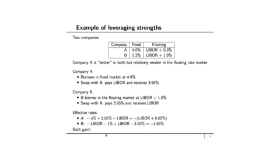Here's an example. Company A, if it were to borrow in the fixed interest rate market, would be charged 4% per annum. If it were to borrow in the floating rate market, it would have to pay LIBOR plus 0.3%. LIBOR stands for the London Interbank Offer Rate, which is used as the base for quoting floating interest rates. Company B, if it were to borrow in the fixed interest rate market, would be charged 5.2%, and in the floating rate market it could borrow at LIBOR plus 1%.